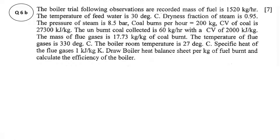In this video we'll try to understand how to draw a heat balance sheet per kg of fuel that is burned in case of a boiler trial. The observations given are: mass of fuel is 1520 kg per hour, temperature of feed water is 30 degrees centigrade, dryness fraction of steam generated is 0.95, pressure of steam is 8.5 bar, coal burned per hour is 200 kg, calorific value of coal is 27300 kJ per kg, unburned coal collected is 60 kg per hour with a calorific value of 2000 kJ per kg, and mass of flue gases generated is 17.73 kg per kg of coal burned.